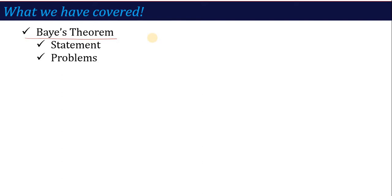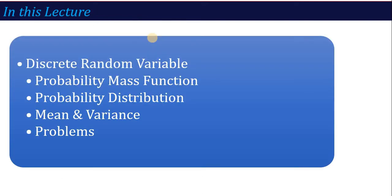In this unit, the main topics are distributions, where you cover three types: binomial, Poisson, and normal. Or if I classify into two categories, one is called discrete and one is called continuous distribution. First of all, we will cover what is distribution, what is a random variable, what is a discrete random variable, what is a continuous random variable, and how we show the probability distribution.